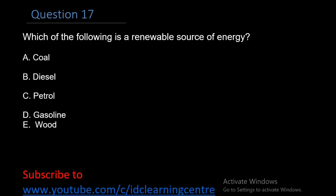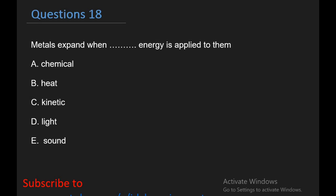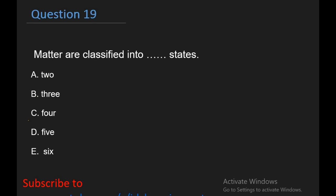Question 17: Which of the following is a renewable source of energy? The answer is E. Wood. And it is considered as humankind's very first source of energy and is still the most important source of renewable energy. Question 18: Metals expand when dash energy is applied to them. A. Chemical, B. Heat, C. Kinetic, D. Light, E. Sound. The right answer is B, Heat.